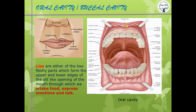The palate is the roof of the mouth. It separates the nasal cavity from the oral cavity, preventing food from going through the nose. It also protects the oropharynx from the nasopharynx and helps us speak — the talavya varna sounds are produced with the help of the palate.